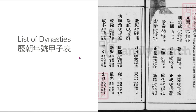Here we have the list of dynasties. China was politically divided during multiple periods in its history, with different regions ruled by different dynasties. Dividing Chinese history into periods ruled by dynasties is a common method of periodization.